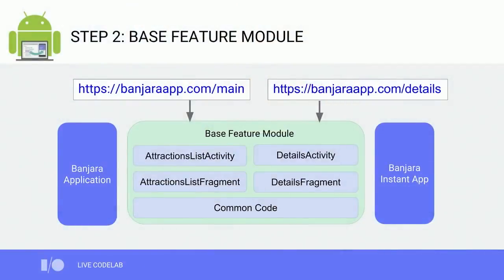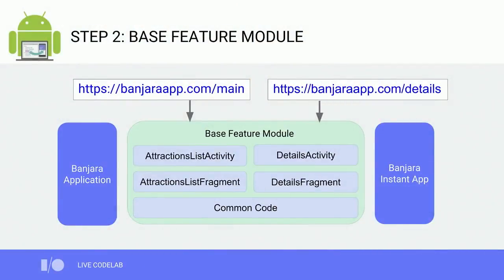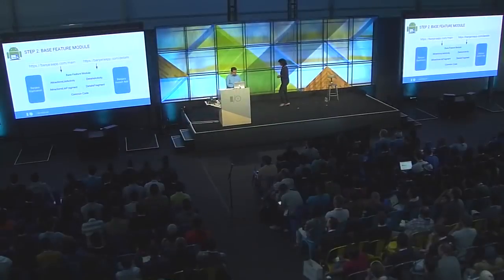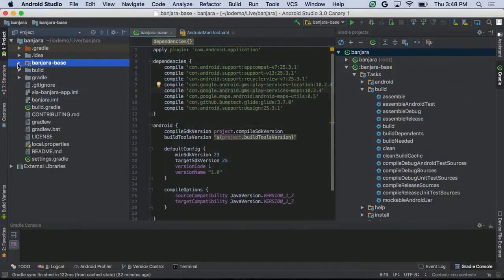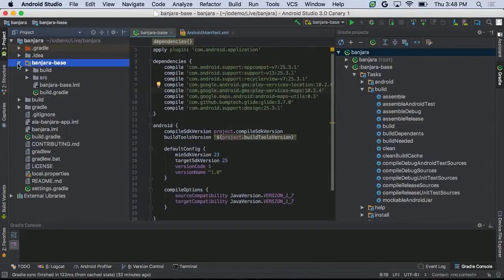Let's move on to step two. We'll take our existing application module and put it in a base feature module, renaming it and changing the Gradle file from com.android.application to com.android.feature — the new plugin. Since all the code will be within the feature module, we can introduce an application module and an Instant App module to build off the same feature module; each doesn't need any code because they'll build off the existing module. My project currently has one module — banjara-base — which is an application module. We'll convert this to a feature module and create two new top-level modules.